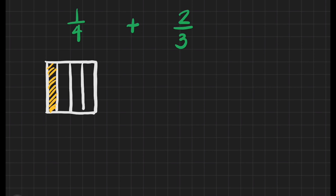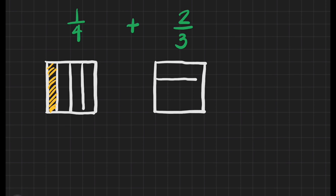And now we are ready to draw the 2/3. Let's divide the whole into 3 equal parts and shade 2 parts. That's 1 and 2.